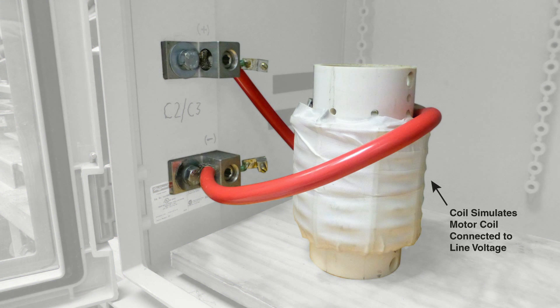The coil is similar to the coil of a motor connected to line voltage, and the can placed inside the coil is similar to a rotor.